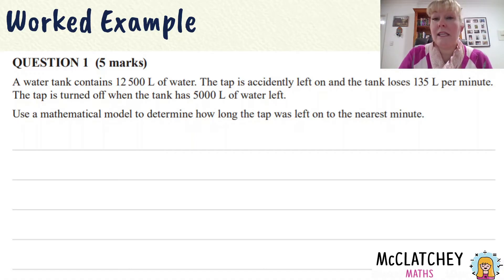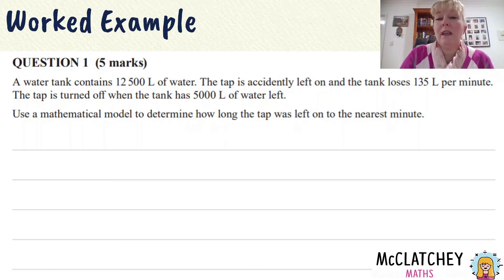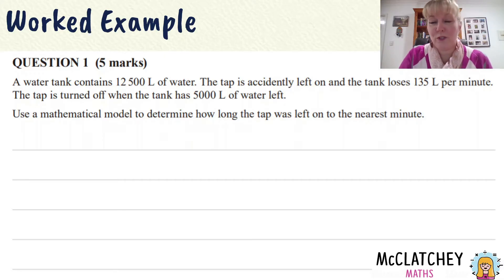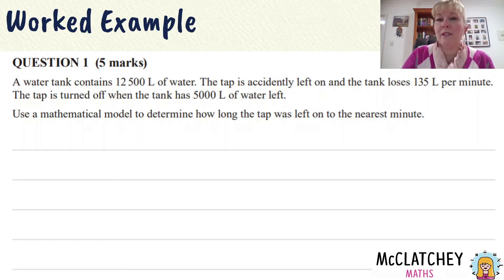You can see that it's worth a total of five marks, which means it's actually worth 5% of paper 1 and 2 combined. Because in Queensland the maths exams are worth 50% of your ATAR result for maths, that means it's worth a whopping 2.5% of your overall result across the two years. So it's a pretty important question — we want to make sure we can access all five of those marks.